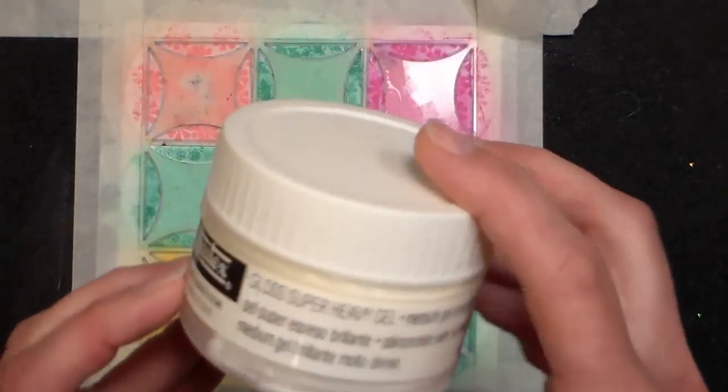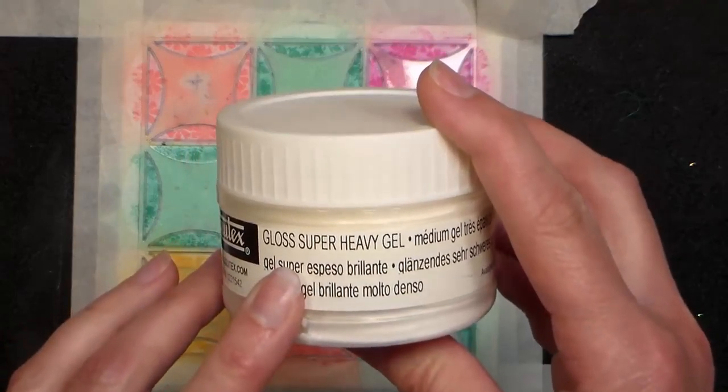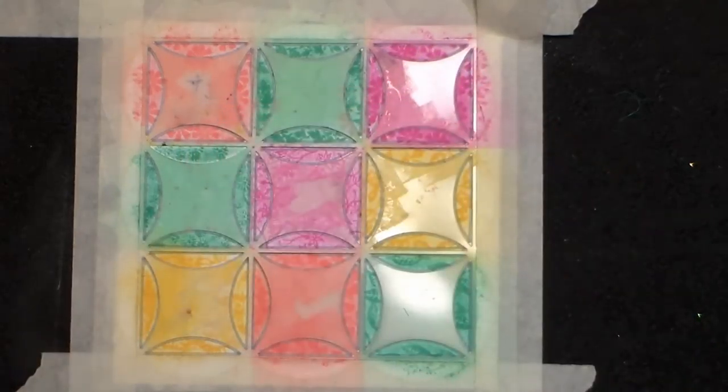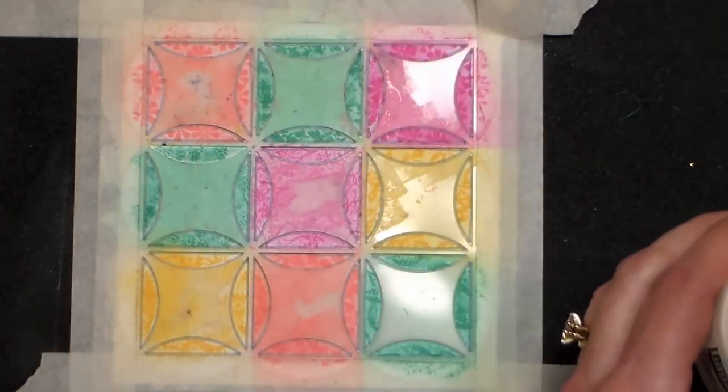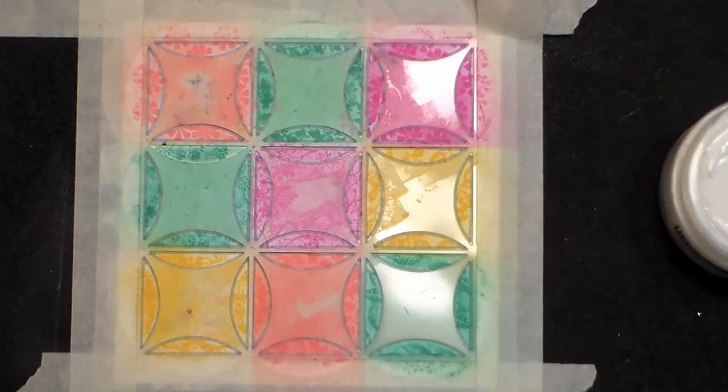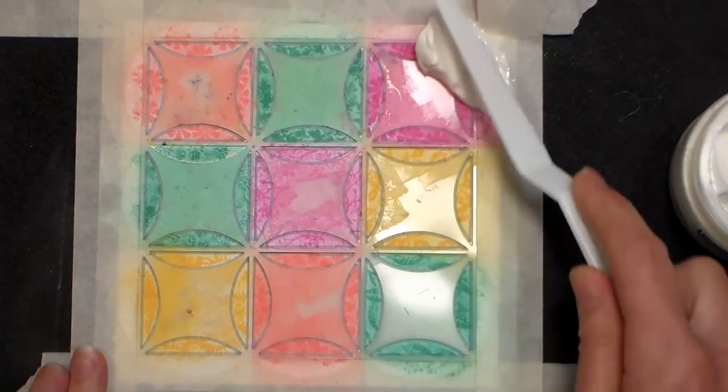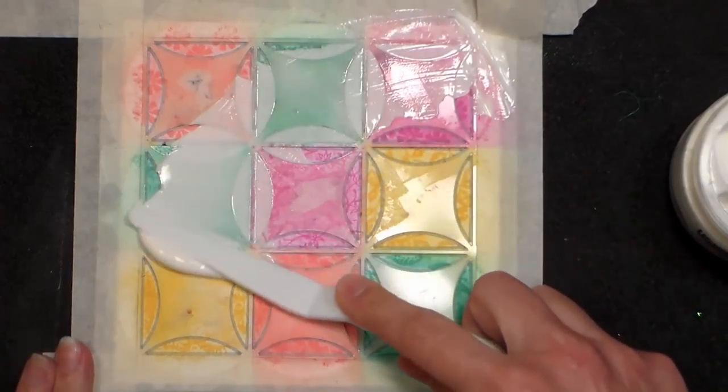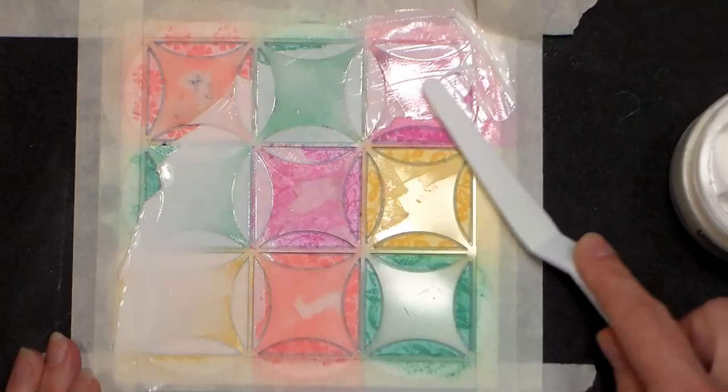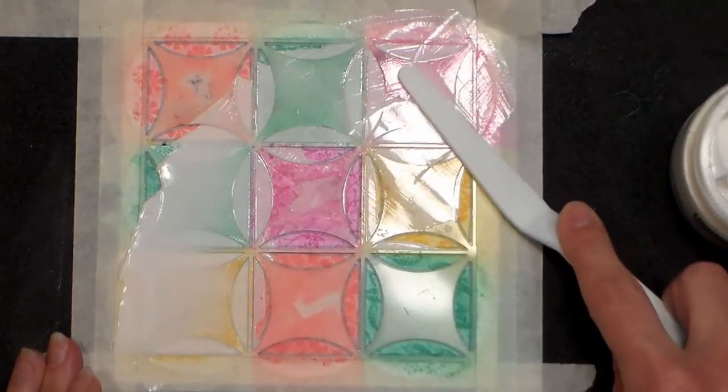Now I'm using some gloss super heavy gel by Liquitex. You could also use any sort of texture paste that's clear, or you could even use some clear latex caulking from the home improvement store if that's easier for you to obtain. Basically use what you have or use what you can get easily.